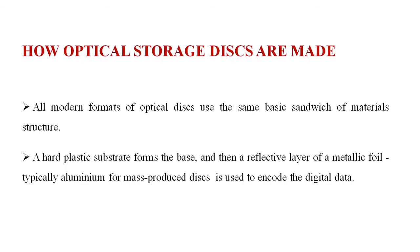All modern formats of the optical disk use the same basic sandwich of materials structure. A hard plastic substrate forms the base, and a reflective layer of metallic film — typically aluminum — is used. Mass produced disks use this structure to encode the digital data.